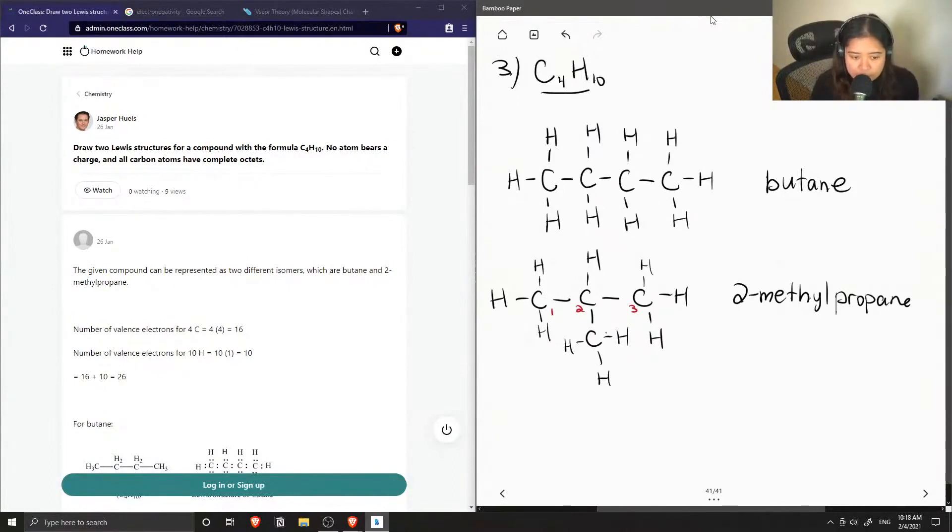Notice that we can no longer move around the carbons in such a way that we have more configurations, because if we were to put another methyl group on either carbon 1 or 3, we would just end up getting butane again. So these are the two Lewis structures you could form with the formula C4H10.